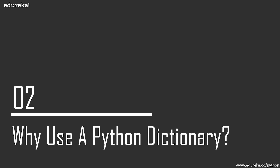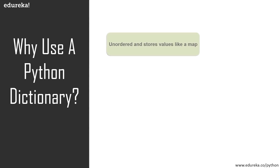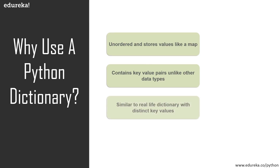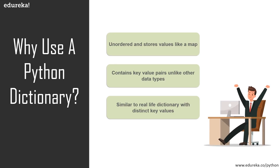Now that we know what dictionary in Python is, let's talk about why we use a dictionary. It is unordered and stores data like a map, which is one unique feature of Python dictionary, and it also contains key-value pairs unlike any other data type in Python. It is almost similar to a real-life dictionary where we have distinct values and corresponding definitions. Even though there are no duplicate members, we can mention duplicate members in the values, but the keys have to be unique. We use the keys as indexes when accessing elements.